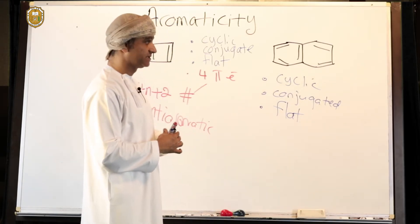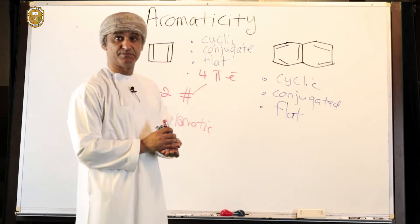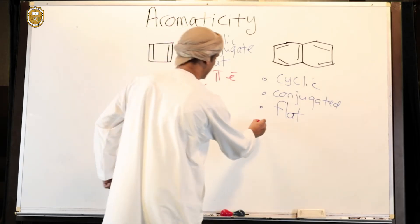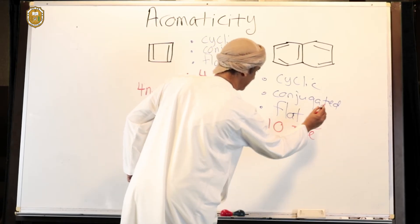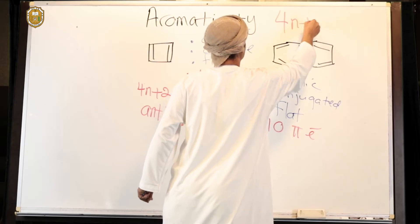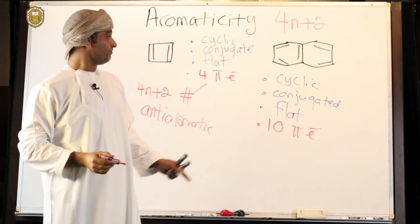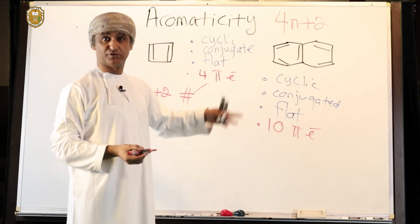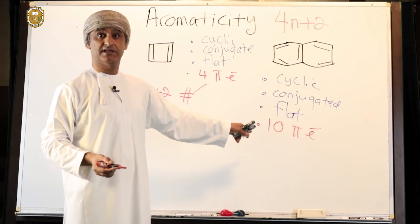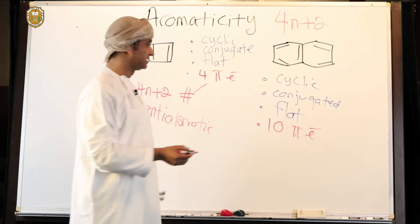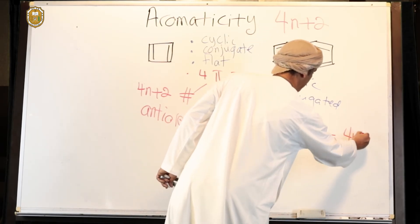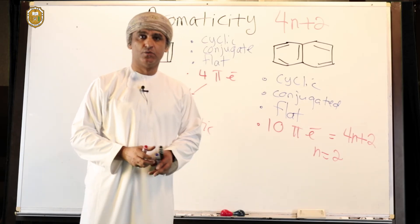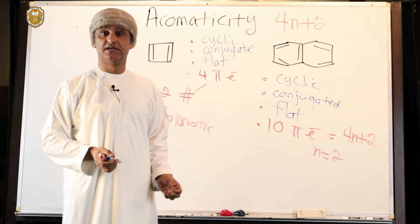What we need to check next is the number of pi electrons. There are five double bonds in naphthalene, and therefore there are 10 pi electrons. We need to check if this satisfies the Huckel rule: if n=1, that gives 6; if n=2, that gives 4(2)+2 = 10. So yes, 10 pi electrons is in accordance with 4n+2, with n equal to 2.